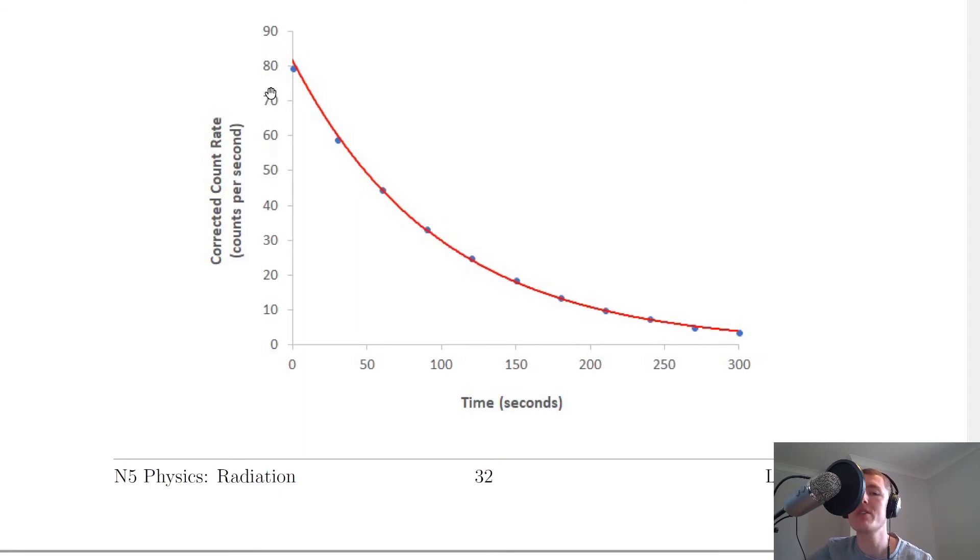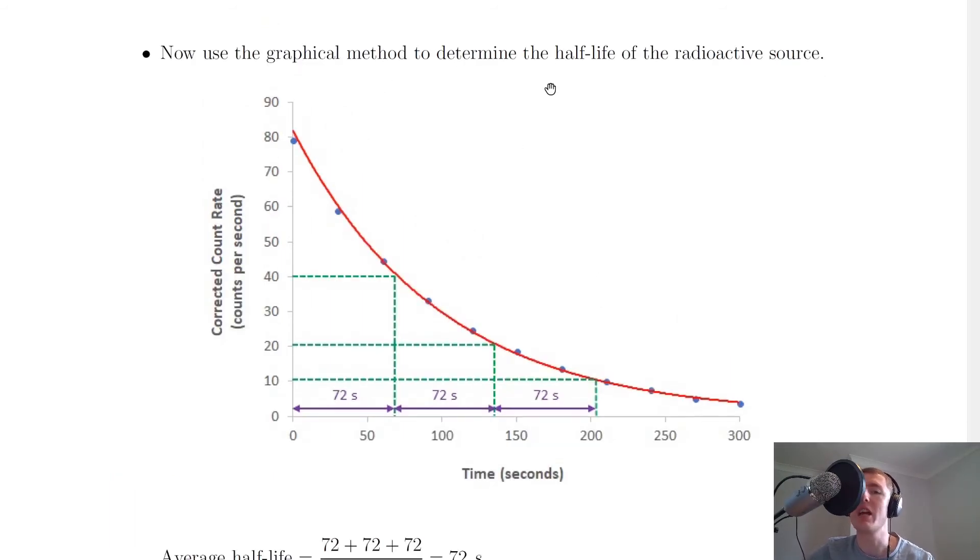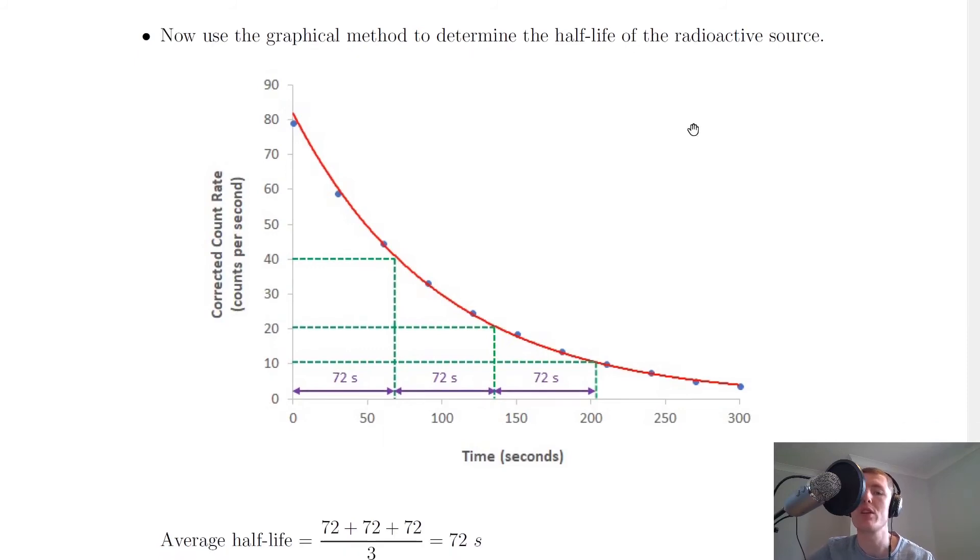So once you've plotted your individual points and your curve of best fit, we can then use the graphical method to determine the half-life of the source. So down here it says now use the graphical method to determine the half-life of the radioactive source. So if we do that, we're going from roughly 80 and halving that down to 40. We go along to our curve and then down and we've got our first chunk of time which is roughly 72 seconds.